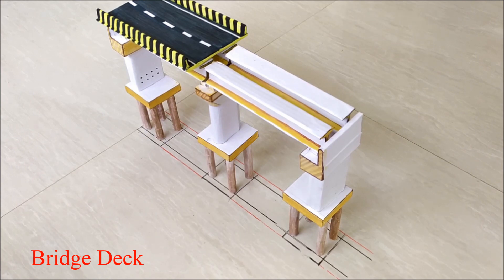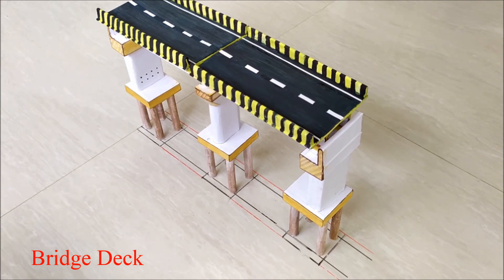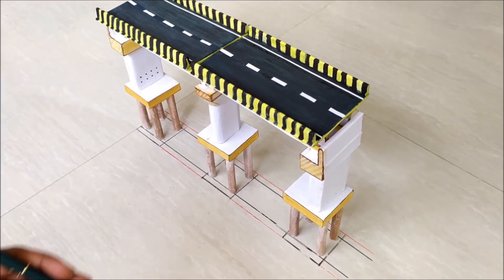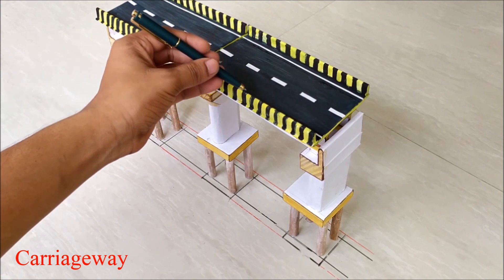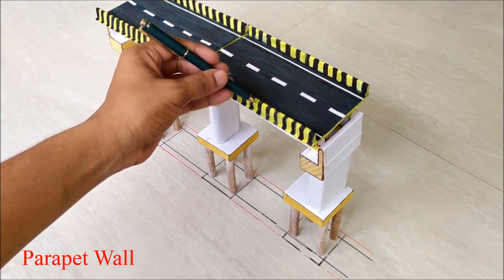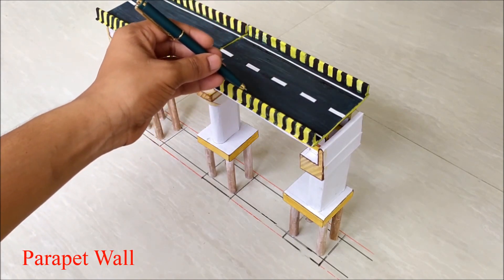This is the final superstructure member called the bridge deck, having two-lane carriageway for traffic movement. And this is parapet wall of the bridge deck provided to prevent the vehicles and pedestrians from falling off.